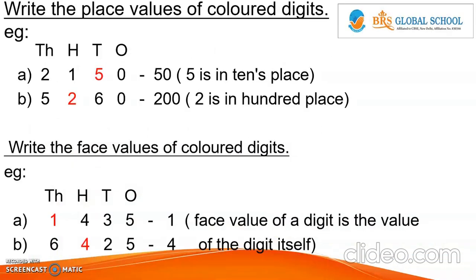Write the place value of the colored digits. For example, in 2150 the colored digit is 5. It is in the 10's place, so the place value of 5 is 50. In the next example, 2 is in the 100's place, so the place value of 2 is 200.